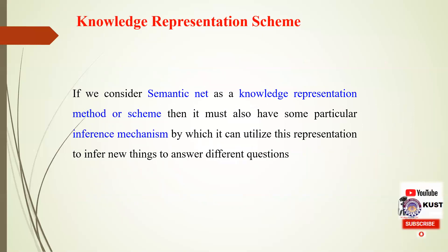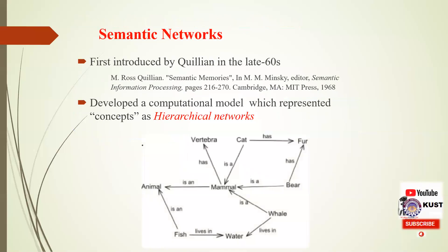This is another view of looking at knowledge — that knowledge can be represented as a network of different concepts. Any collection of facts or information cannot be knowledge unless it is used for inferring some new facts. If we consider semantic net as a knowledge representation scheme, it must also have some particular inference mechanism. The idea of semantic nets dates back to 1966, in two very important papers written by Ross Quillian, who was one of the early workers of artificial intelligence. He tried to represent the organization of human semantic memory as a hierarchical network, used for analyzing meanings of words within sentences.